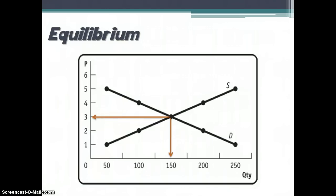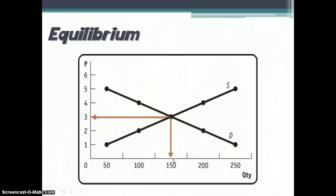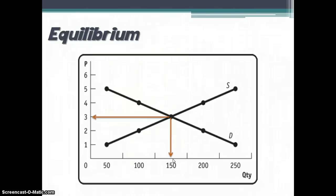If we draw out a graph of this market, we put price on the vertical axis and quantity on the horizontal axis. We graph out demand and supply, and where those two curves intersect is our market clearing price and quantity — at $3 per can and 150 cans of soda per week. We'll continue moving forward looking at why supply shifts and equilibrium, and we'll keep working on this model over the next couple of days.